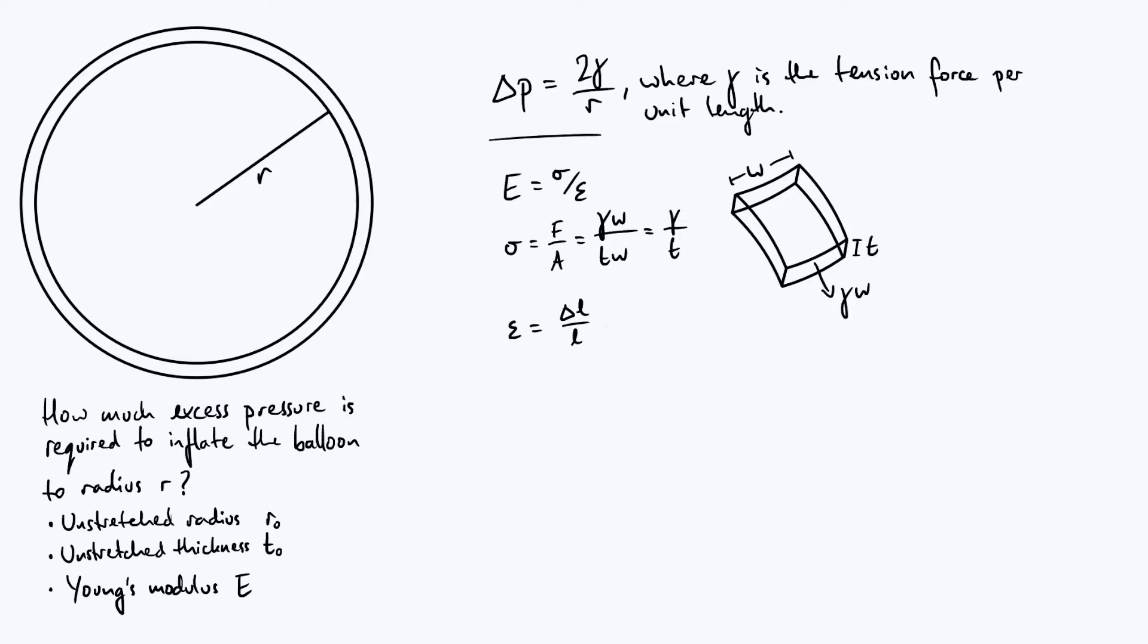So instead of our small volume element, we're actually going to consider a big ring-shaped element which is basically the cross-section of the balloon along one of its great circles. In other words, basically what I've drawn out in my very first diagram.